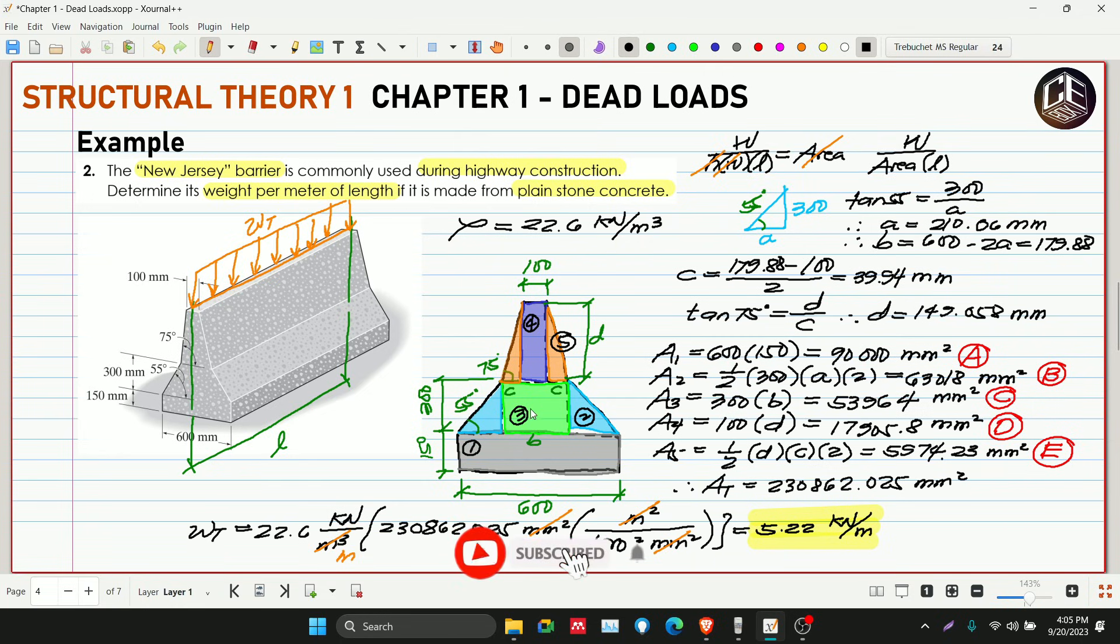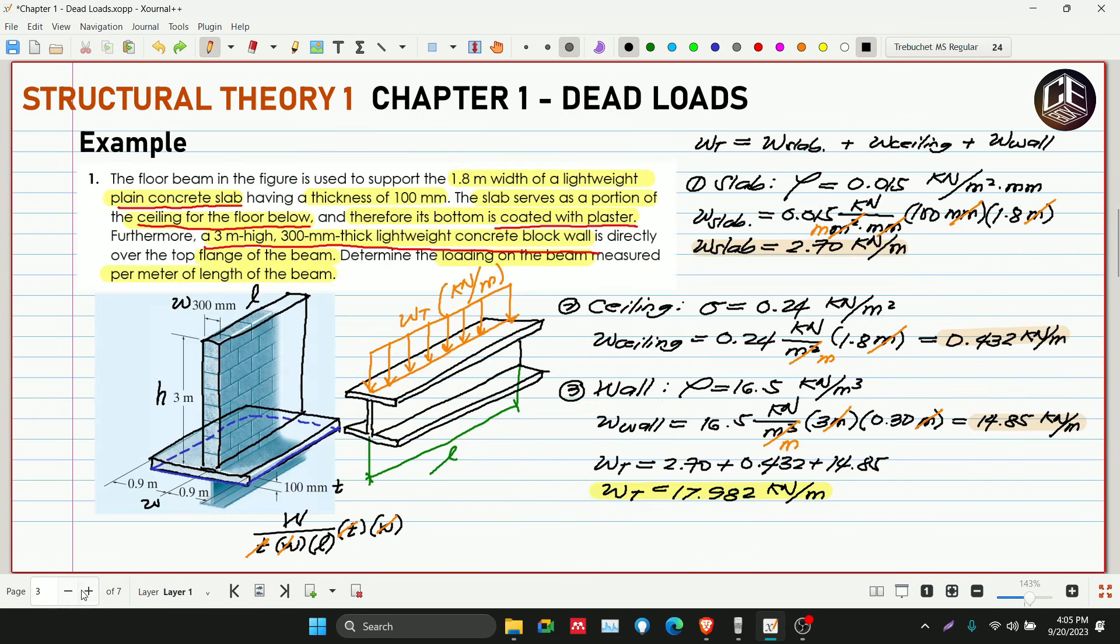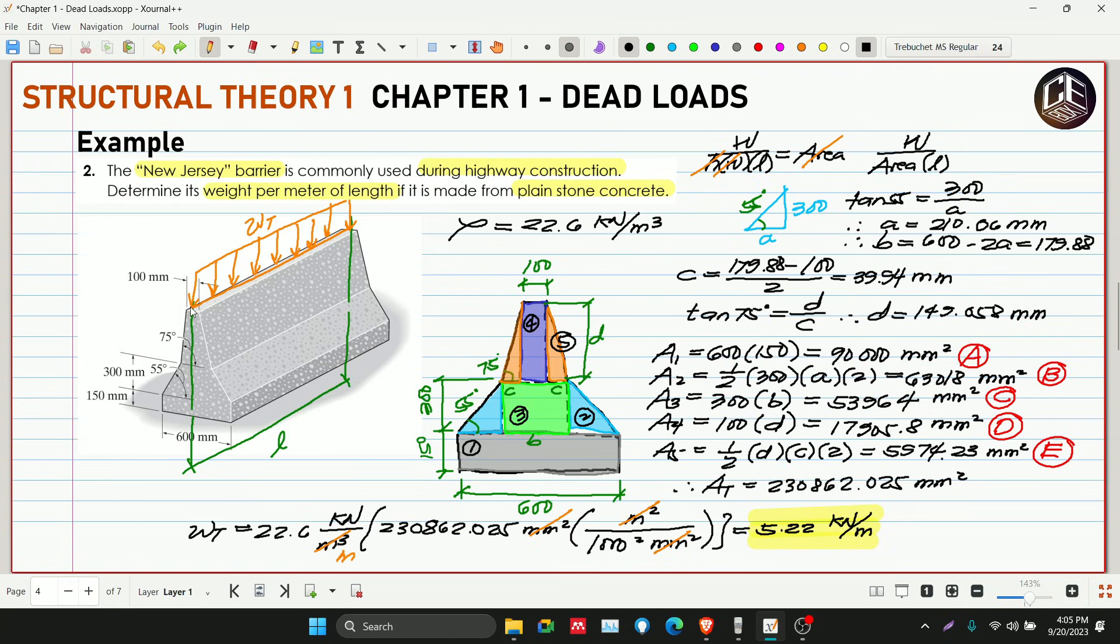So yan lang naman sya. Area 1, 2, 3, 4, and 5. So I hope na naintindihan ninyo kung paano natin sinolve yung ating total weight para sa ating New Jersey barrier. Hindi naman na sya medyo komplikado unlike sa ating problem number 1. Pero mas madaling isolve yung problem number 1, kasi puro rectangular parallelepiped yung shape. Not unlike sa ating example number 2. Talagang irregular na yung ating cross-sectional area. Kaya medyo matagal siyang isolve, ang daming unknown. Kaya medyo nagtagal tayo sa problem number 2. But anyway, I hope na natutunan nyo pa rin at naintindihan ninyo kung paano magsolve ng ating total weight for this kind of problem. So please don't forget.